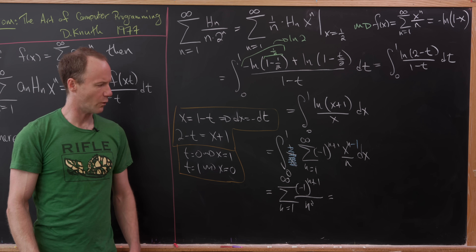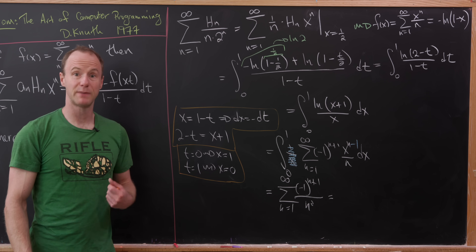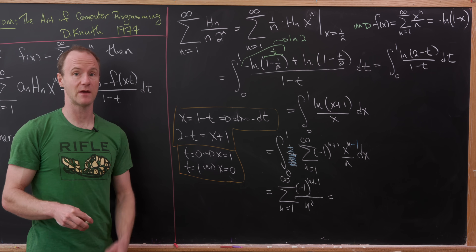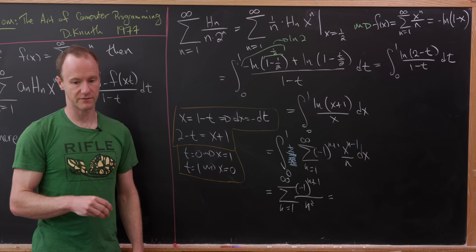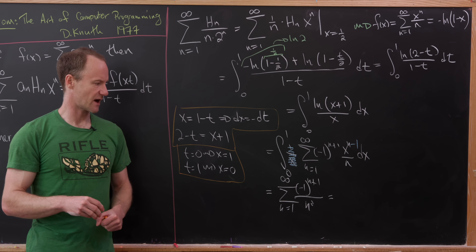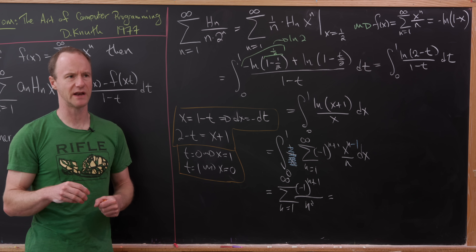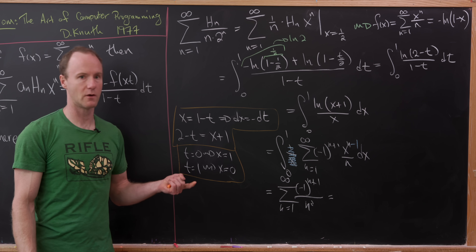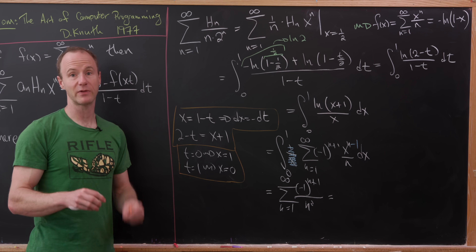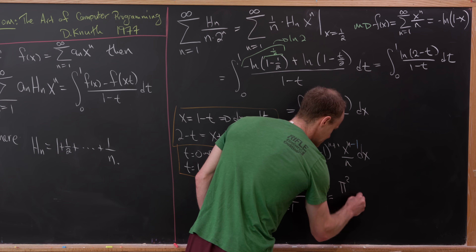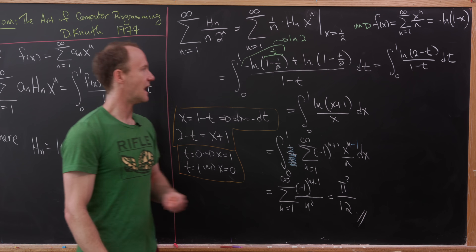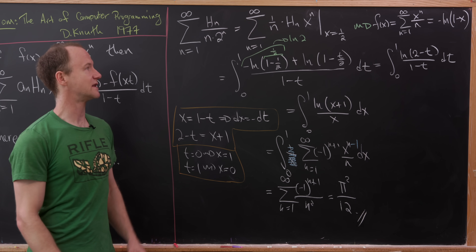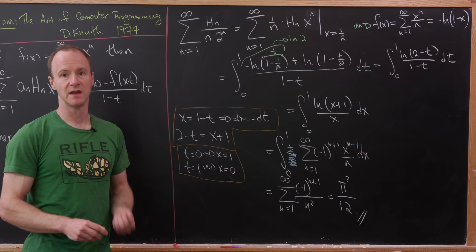So this is the sum as n goes from 1 to infinity of (-1)^(n+1) over n², which has the well-known value pi²/12 — we've actually calculated that on the channel before. It's related to the famous Basel problem, the sum of reciprocals of squares. And there you have it: a nice identity from Knuth's old computer programming book, as well as a pretty cool application. That's a good place to stop.